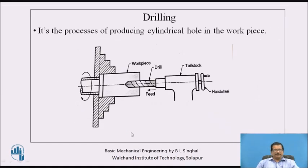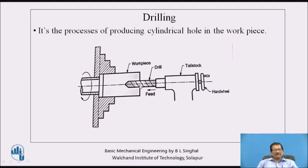Next is the drilling operation. The limitation of drilling on a lathe is that we can drill only along the axis of the workpiece; we cannot generate a hole other than along the axis. It is the process of producing a cylindrical hole in the workpiece. The job is held in a work-holding device and the drill is held in the spindle of the tailstock. The tailstock is moved near the workpiece and clamped; then by rotating the handwheel, the spindle moves toward the headstock and generates the drilled hole. If a larger hole is required, the drill bit is changed to increase the hole size. Coolant is required and the speed depends on the hole size.